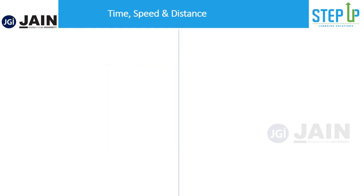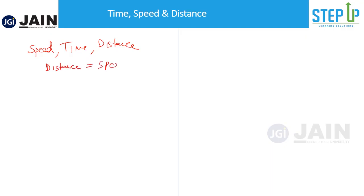I'd like you to focus on this concept of TSD. I'm sure all of us already know the relationship between speed, time and distance. Distance is a function of two things: speed and time — that is, distance equals speed into time. So if you increase your speed, your distance increases. If you increase your time, your distance also increases. That means distance has a direct proportionality with both speed and time.